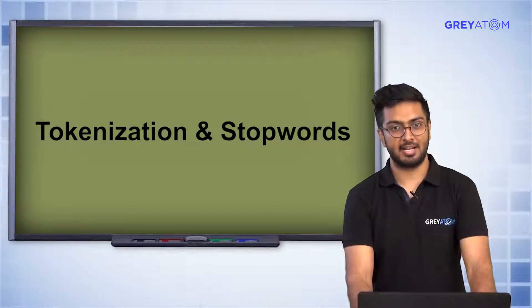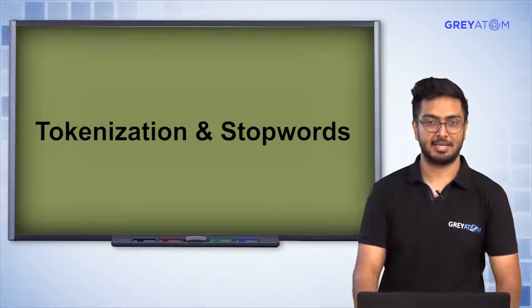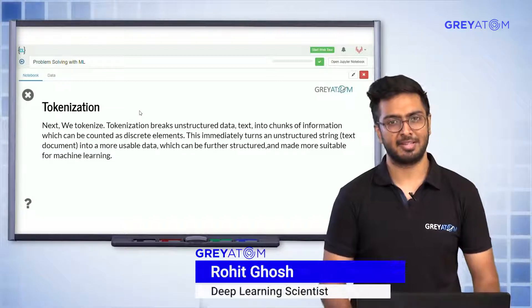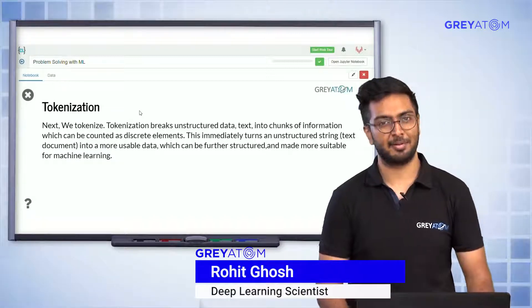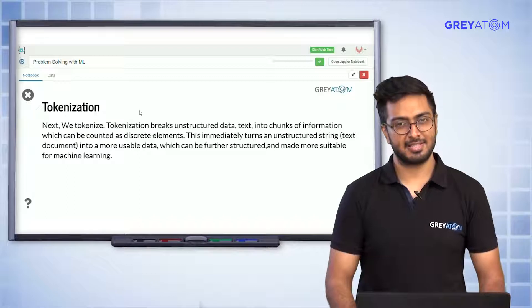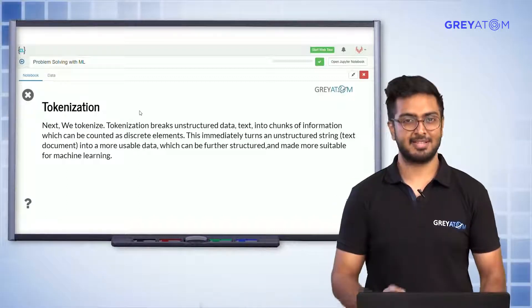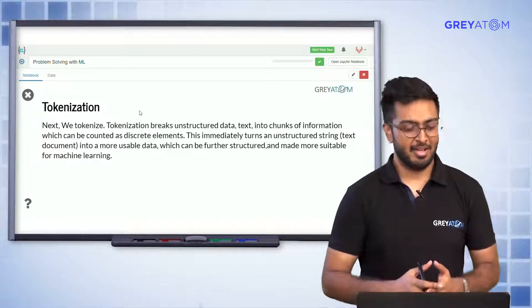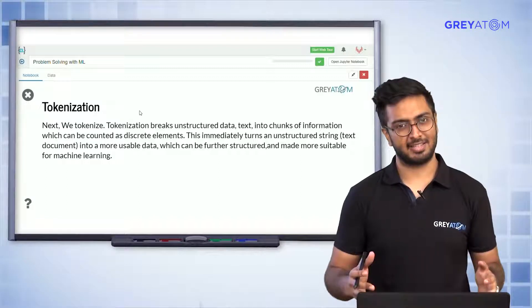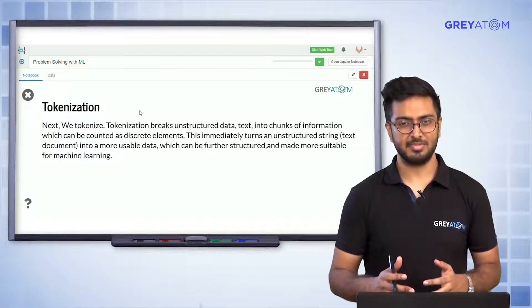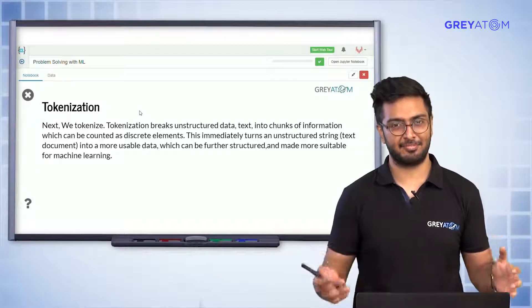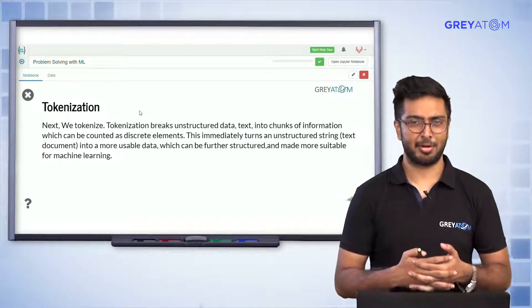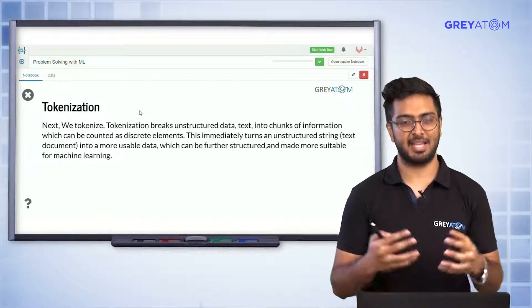The next concept to understand is tokenization. If you come from a computer science background and have done basic compiler courses or studied interpreters, this is something you're already familiar with. For those not from a CS background, let's first understand what tokens are. Tokens are basically the atomic elements of your text.